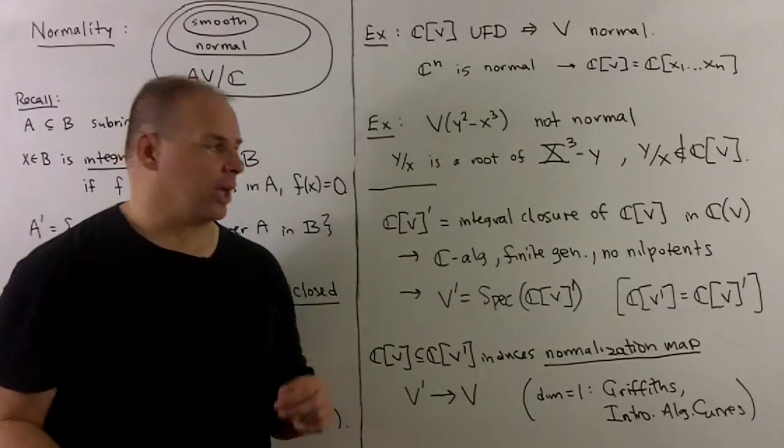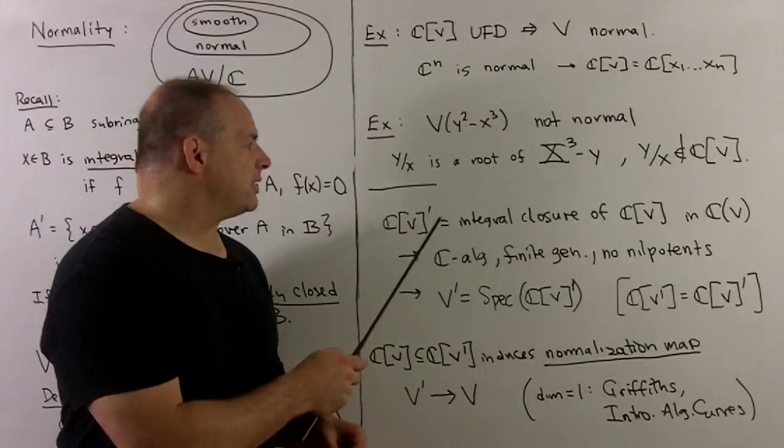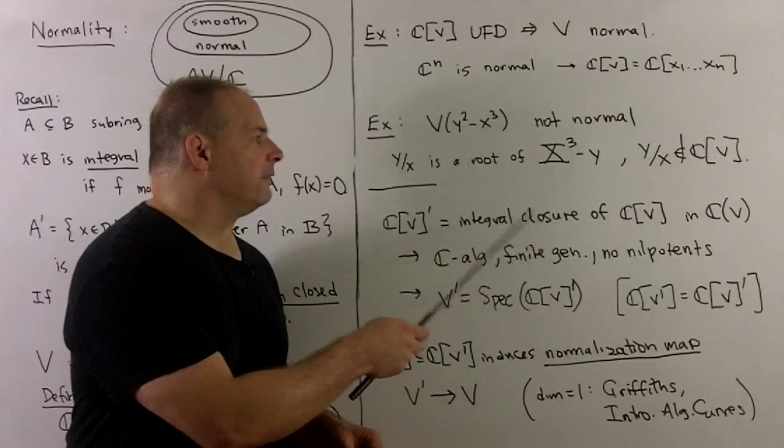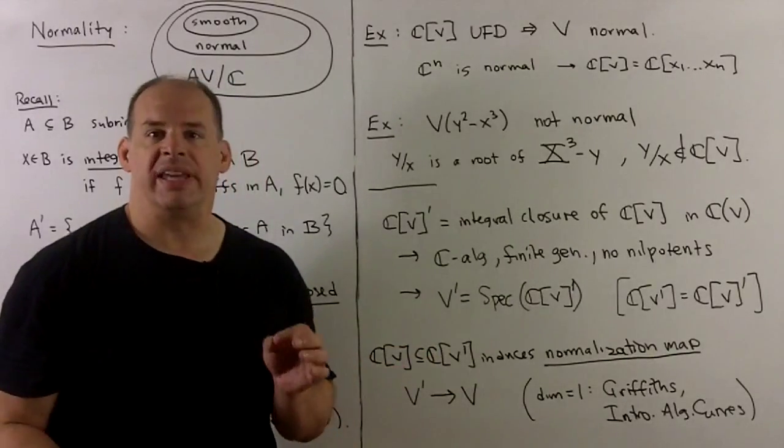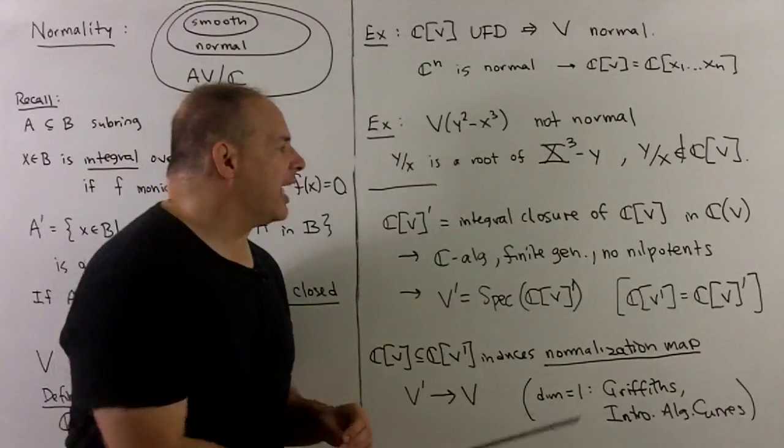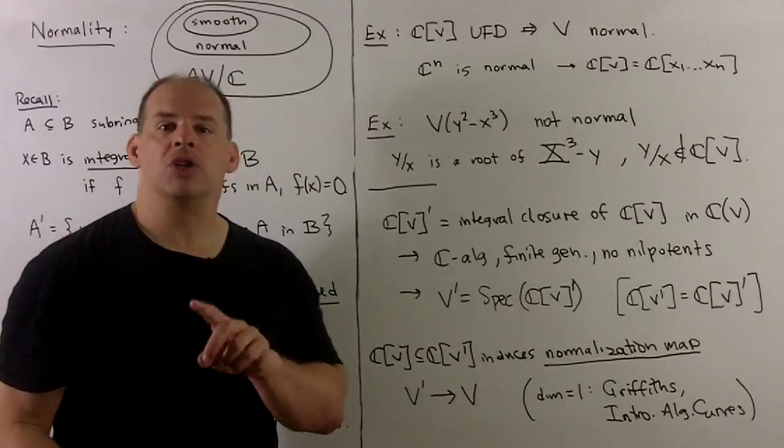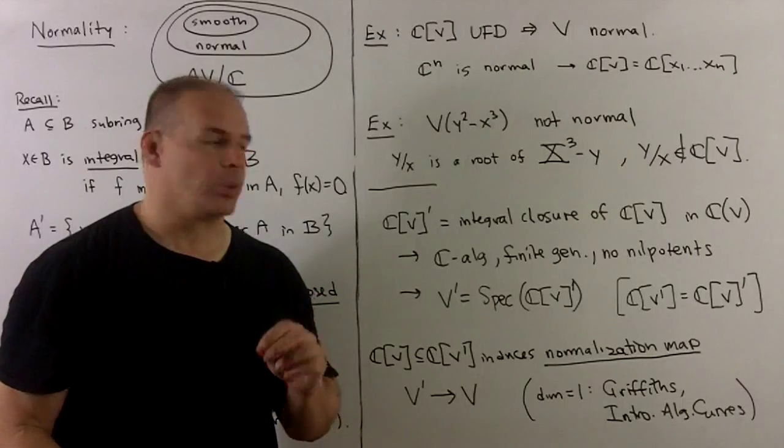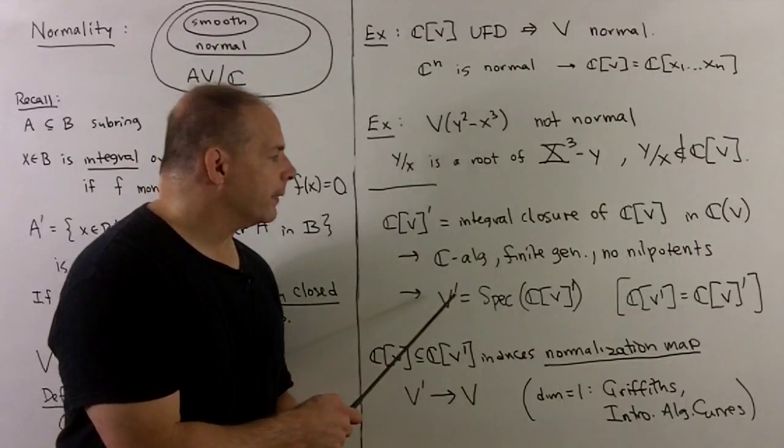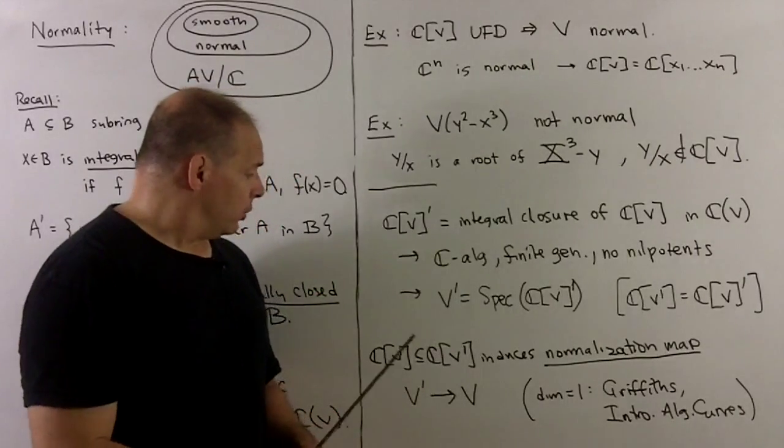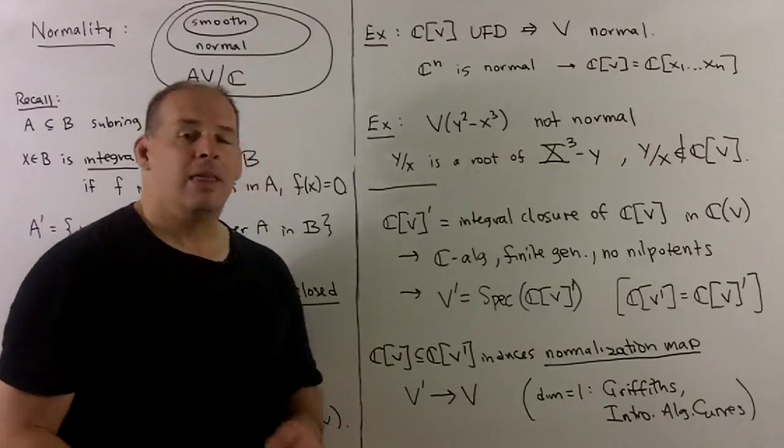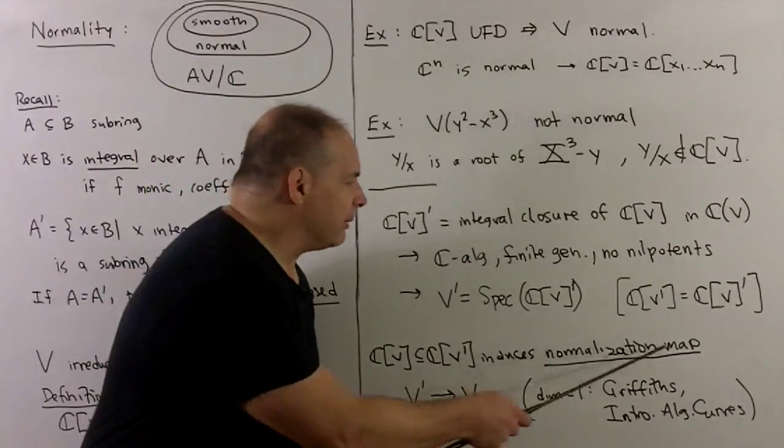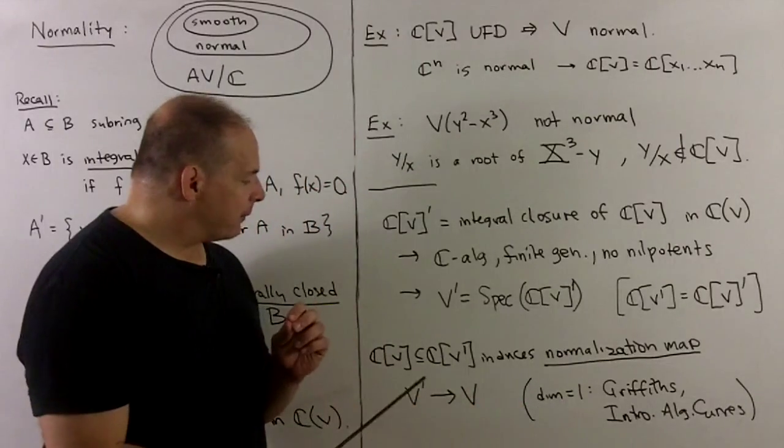A little bit of big picture: Let's take the integral closure of our coordinate ring in the field of rational functions. I'll call that C[V]'. That's a C-algebra, finitely generated, has no nilpotents. So that corresponds to some affine variety, which we'll call V'. The coordinate ring for V sits inside the coordinate ring for V'. That induces what we call the normalization map from V' to V.